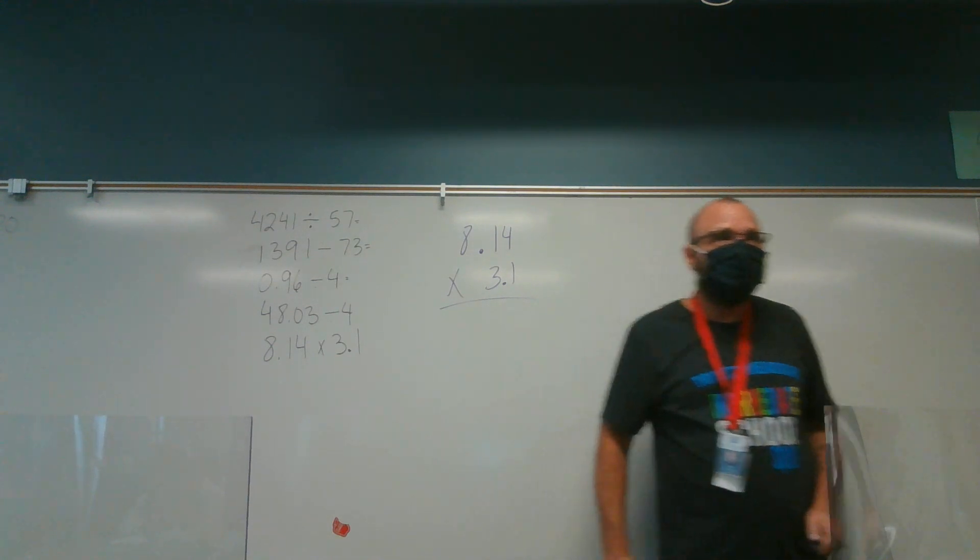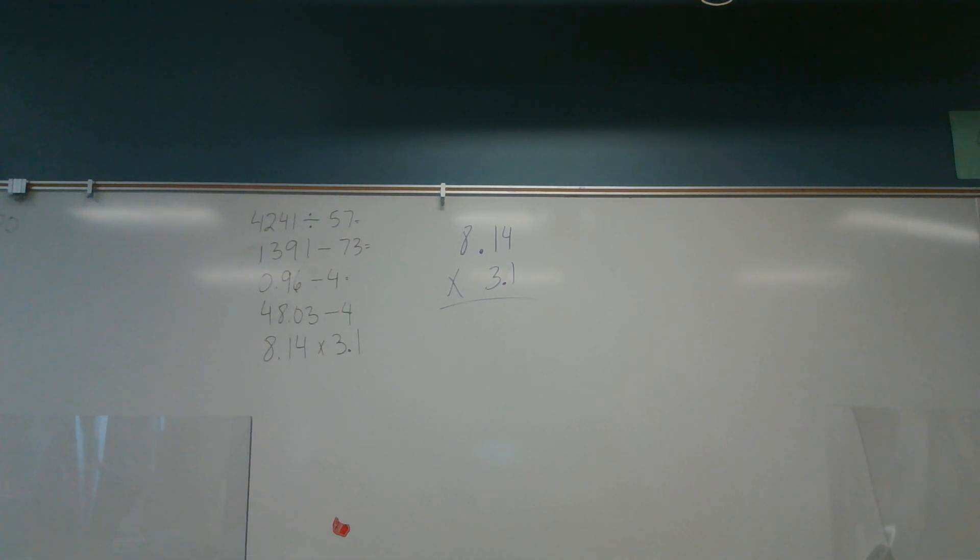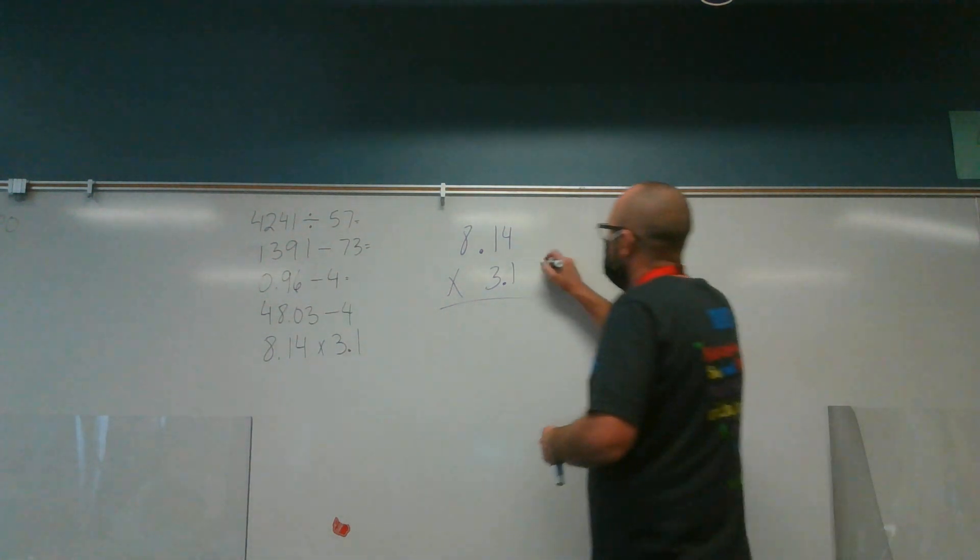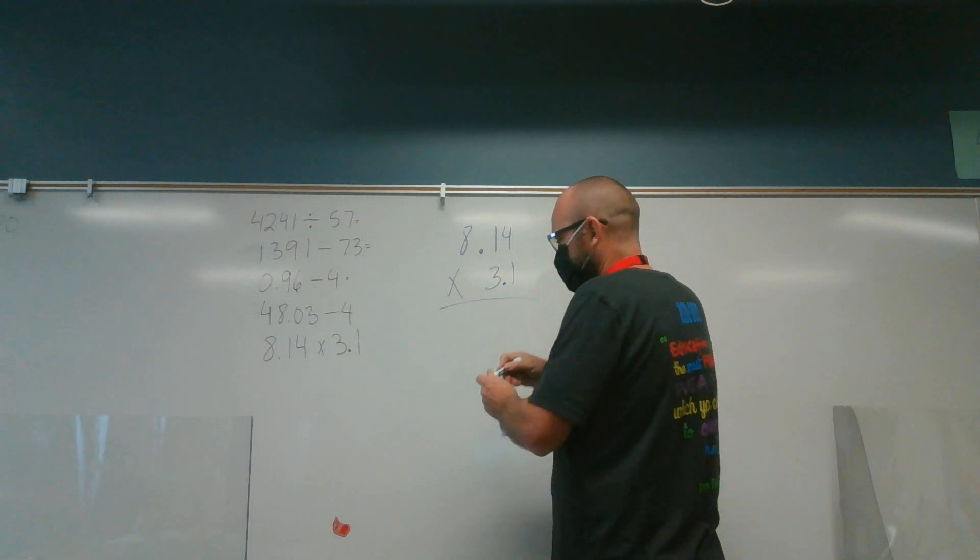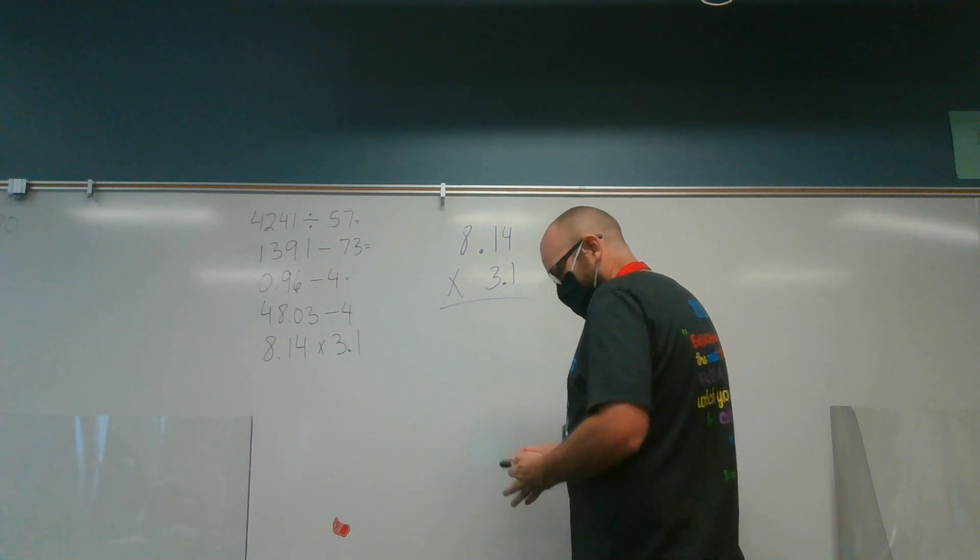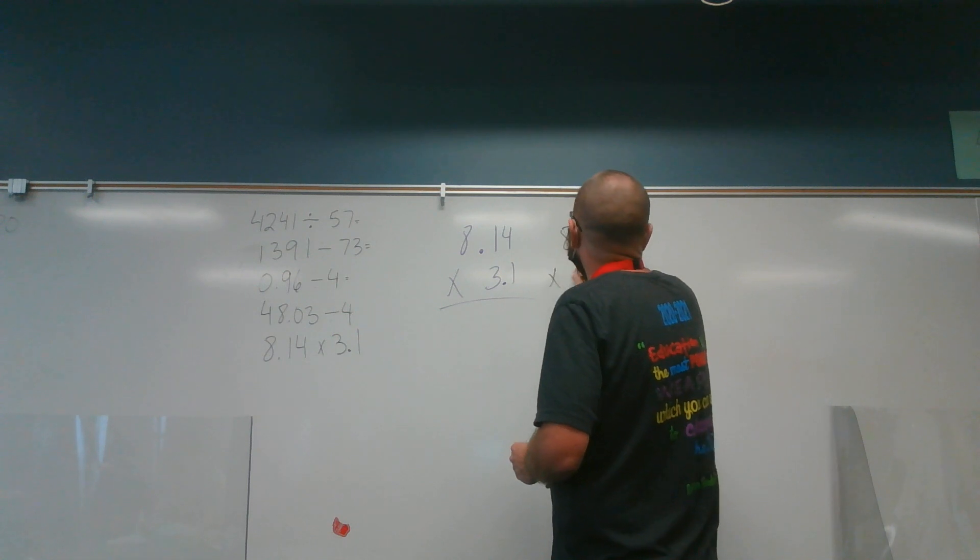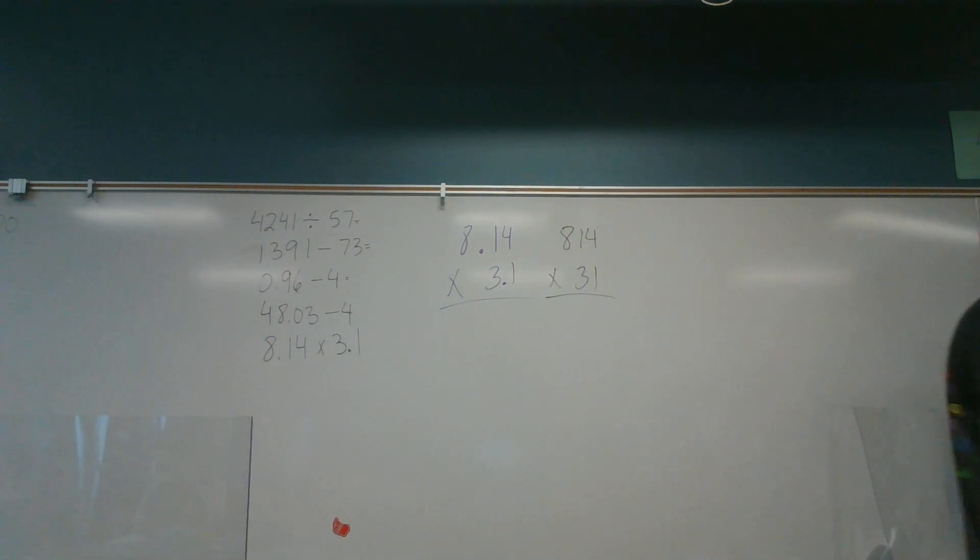When we multiply with decimals, you do not line up the decimal points. In fact, we don't even worry about the decimal points. We rewrite it, ignoring the decimal points. What? When I rewrite it, then I'm just going to do it 814 times 31. I'm rewriting it, ignoring the decimal points. I don't need to look at the decimal points right now. It's not important right now. It's not important until we get our final product.